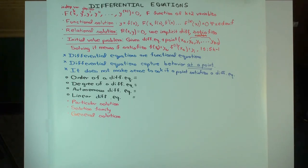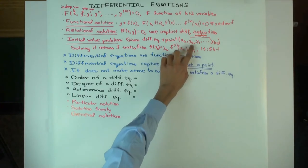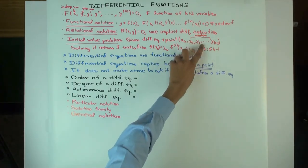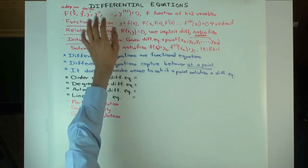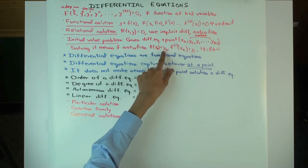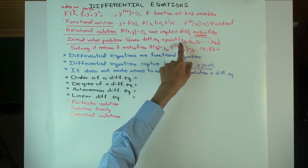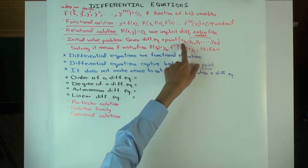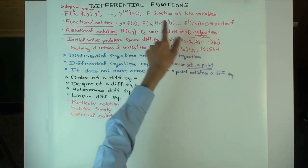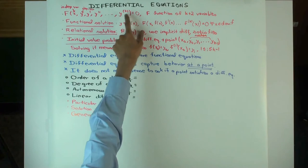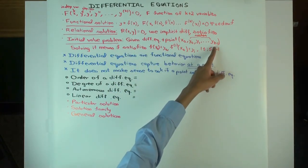The next thing is a slightly trickier concept called an initial value problem. An initial value problem is a situation where a single differential equation would have lots of solutions, and an initial value problem gives additional information about which solution you want. It gives you a point x₀, y₀, y₁ up to y_{k-1} — all actual numbers. You want to find a solution to the differential equation which satisfies the initial condition that f(x₀) = y₀, the first derivative at x₀ equals y₁, the second derivative equals y₂, and so on up to y_{k-1}.